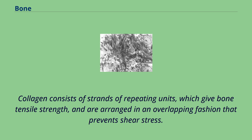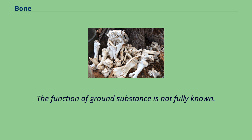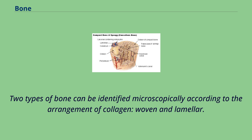Collagen consists of strands of repeating units which give bone tensile strength and are arranged in an overlapping fashion that prevents shear stress. The function of ground substance is not fully known. Two types of bone can be identified microscopically according to the arrangement of collagen: woven and lamellar.